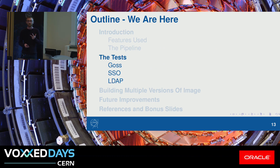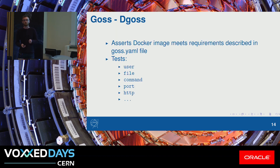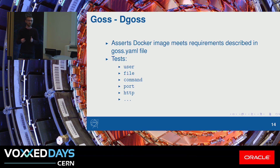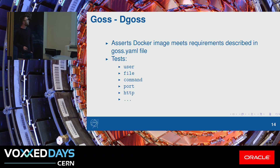Now I want to go through three of the tests in a bit more detail. The first one is using a tool called Goss. Goss is a testing tool — it describes itself as a lightweight server spec. I like to call it a lightweight desired-state testing tool. It's a tool where you give it a YAML file with the requirements for your image, and it will assert or check if your image meets those requirements.